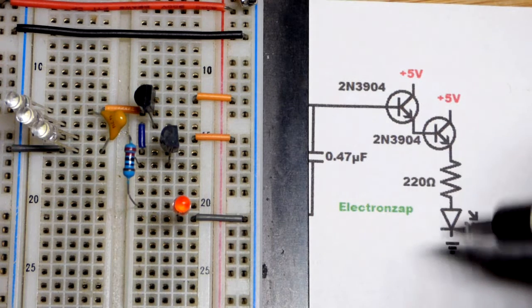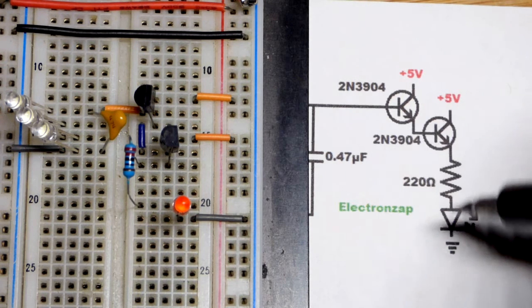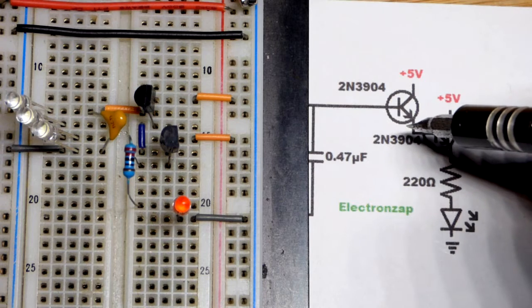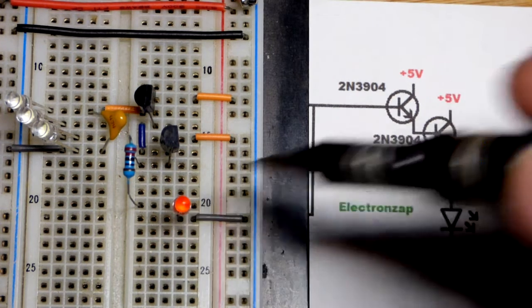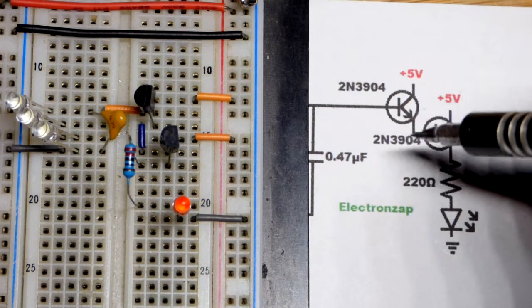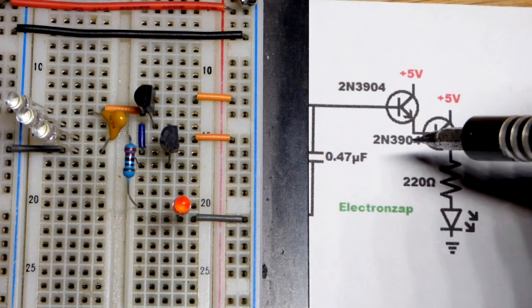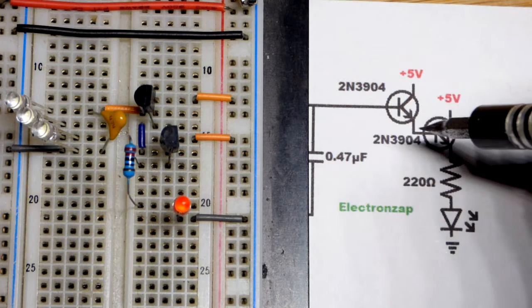When you have a load between the emitter and ground, that voltage builds up across that load. But we didn't have enough gain - the transistor couldn't provide a big enough multiple by itself to light the LED.